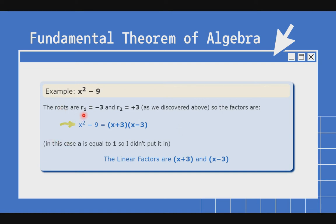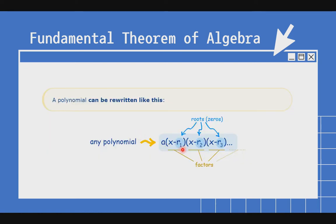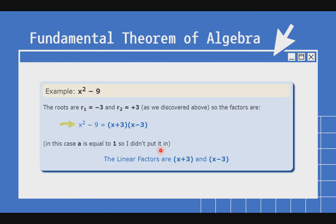The roots are: r₁ is equal to negative 3, and r₂ is positive 3 — katulad yung sinolve natin kanina. So we can rewrite x squared minus 9 as (x plus 3) times (x minus 3). Yung format ay x minus the root. Kaya naman, naging minus negative 3 yung una, kaya naging plus. Yung pangalawa naman is minus positive 3, kaya naging minus 3.